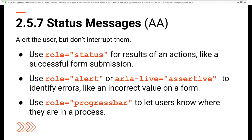The next is Status Messages, Level AA. There are lots of reasons why we alert users on the status of what they're doing — errors on a form, successful cart additions, or where they are in a multi-step process. When we alert users of these things, we need to make sure their assistive technologies are alerted as well, without interrupting the user by focusing them on another element or putting them on a new page. By using the appropriate ARIA roles, we can ensure this: use role='status' for results of an action, role='alert' or aria-live='assertive' to identify errors, and role='progressbar' to let users know where they are in a process.